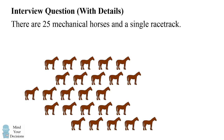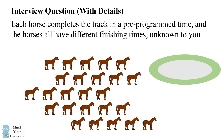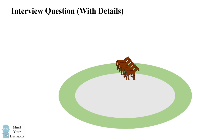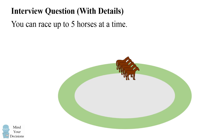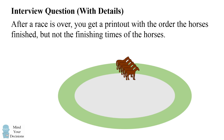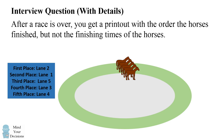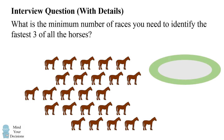There are 25 mechanical horses and a single race track. Each horse completes the track in a pre-programmed time and the horses all have different finishing times, unknown to you. You can race up to five horses at a time. After a race is over, you get a printout with the order the horses finished, but not the finishing times of the horses. What is the minimum number of races you need to identify the fastest three of all the horses?